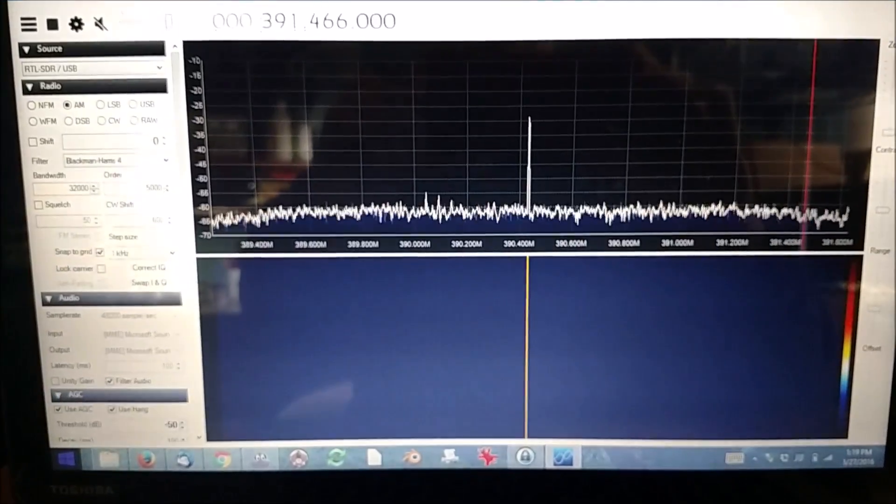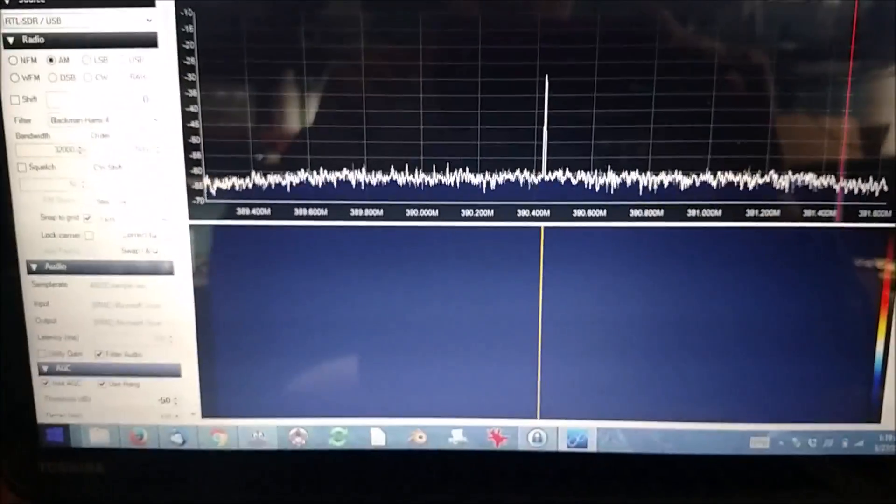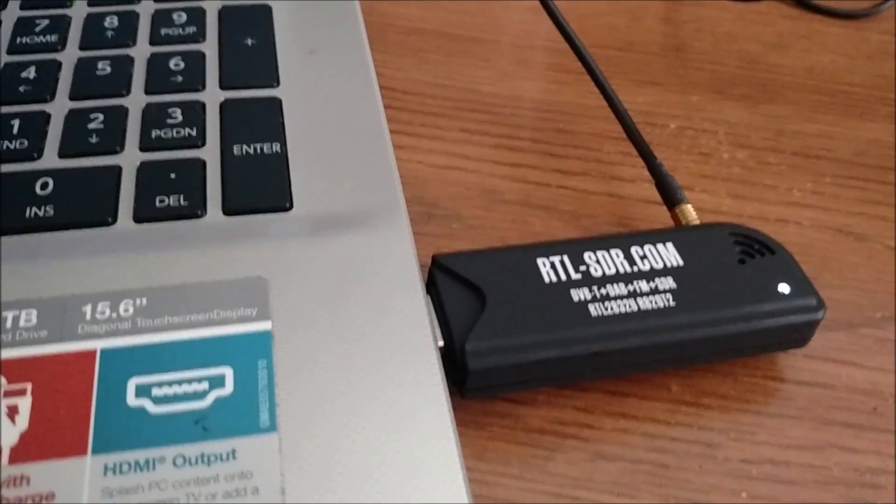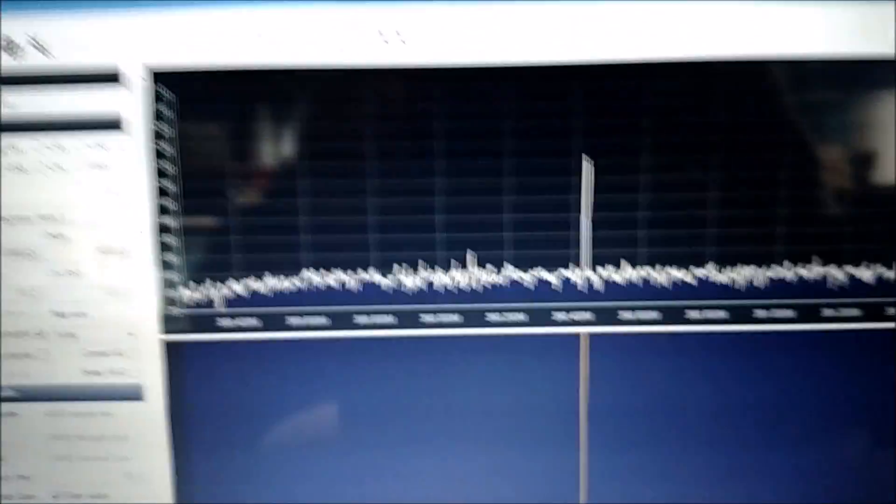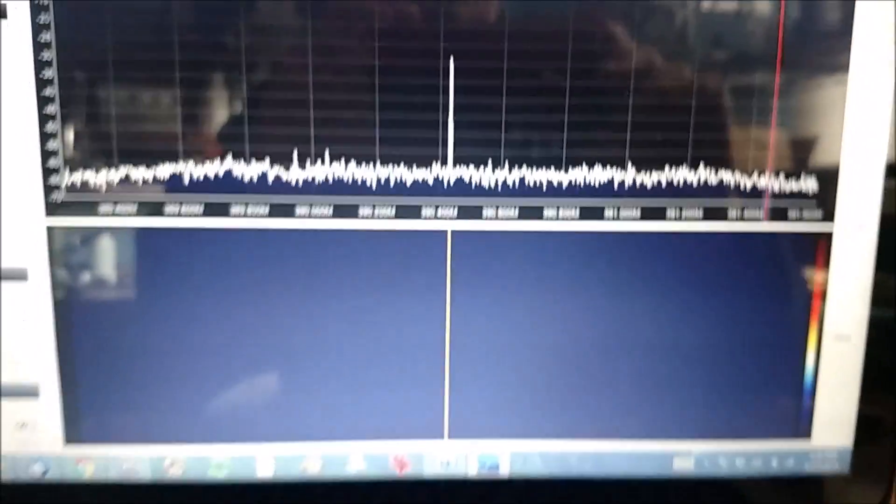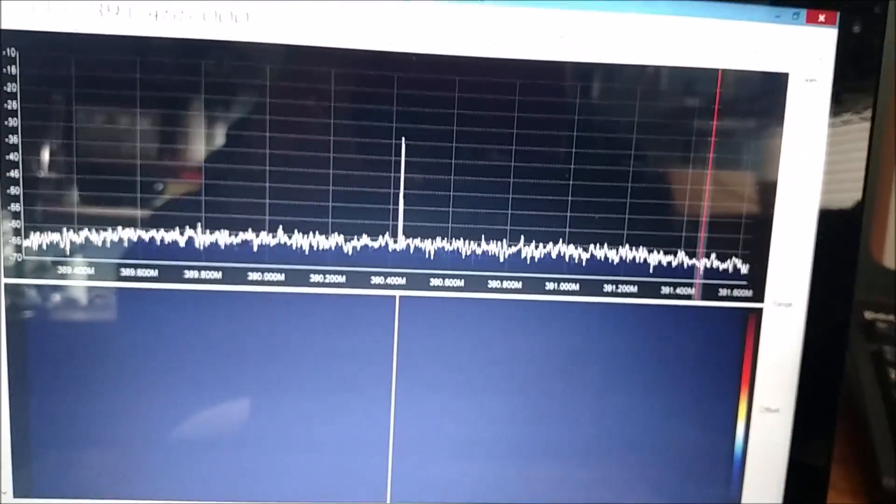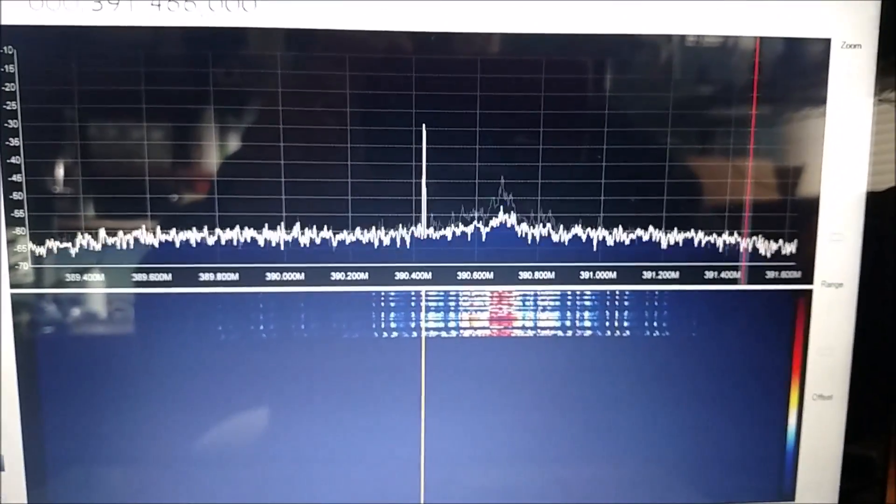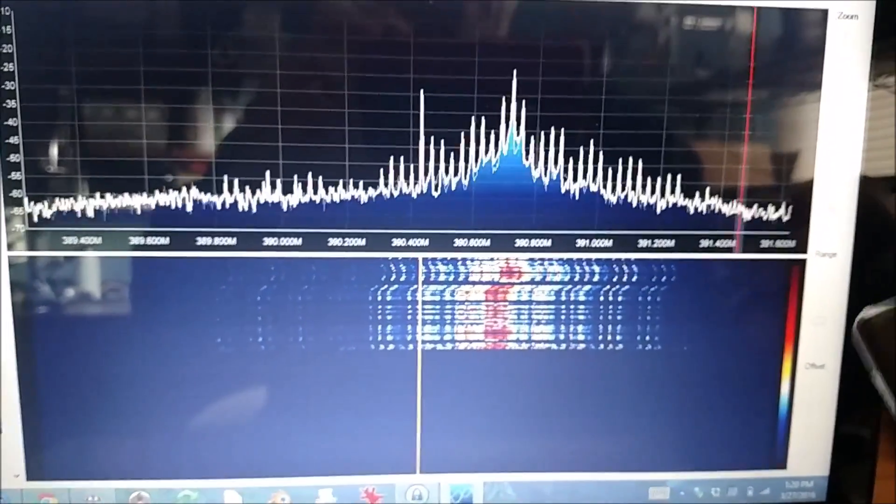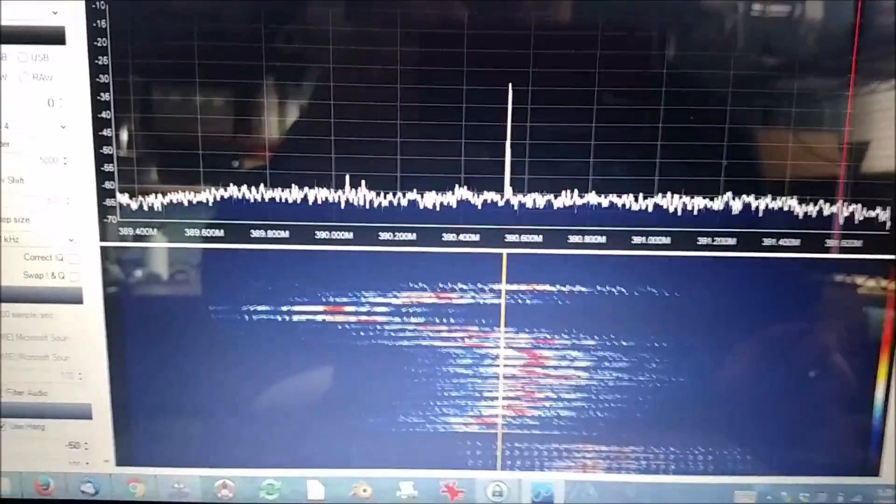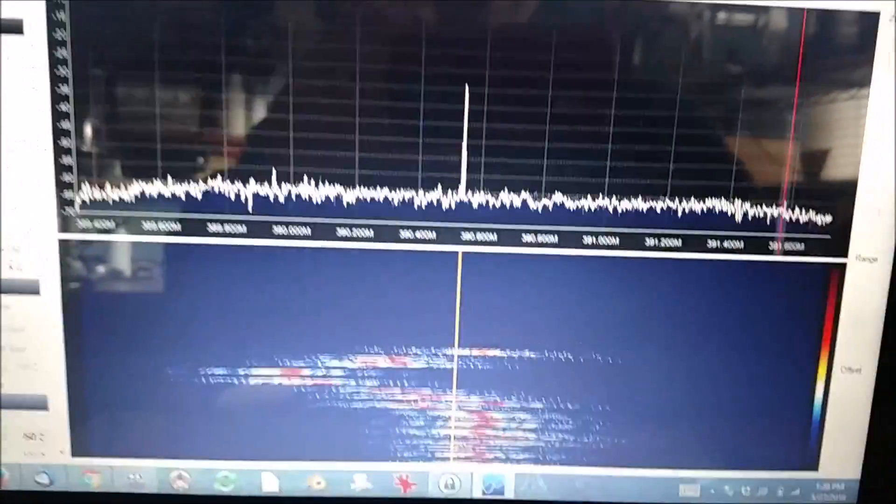So I thought I'd check if it was actually transmitting. Over here on my laptop I have an RTL SDR software-defined radio dongle. I looked up the FCC ID number—these remotes transmit on 390 megahertz. You can see with the good remote, my visor remote, if I hit the button you can see the transmission there. Interestingly, if I hold it, the frequency changes quite considerably depending on how I hold it in my hand.